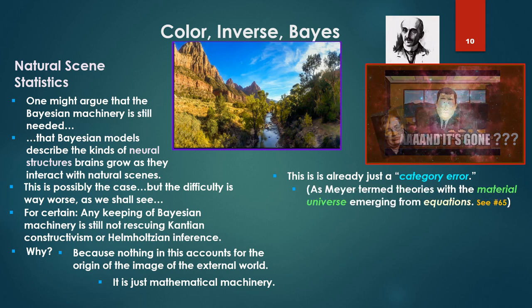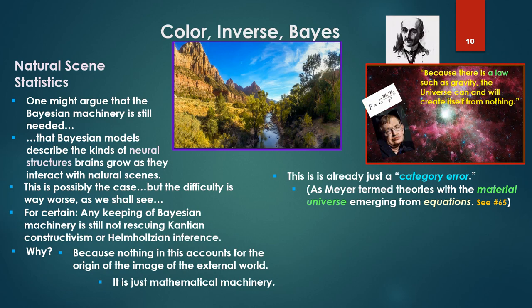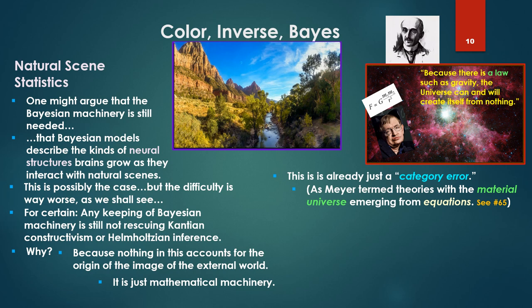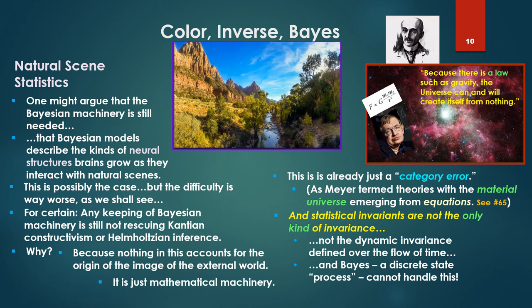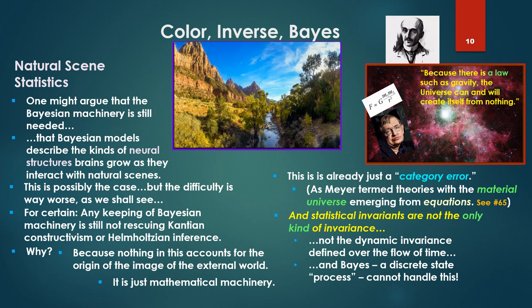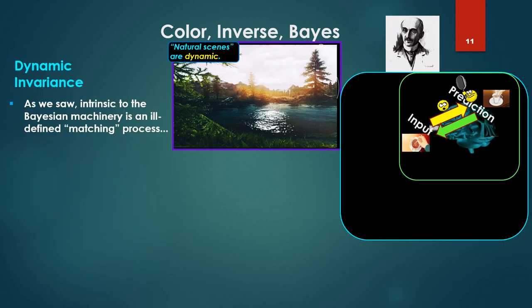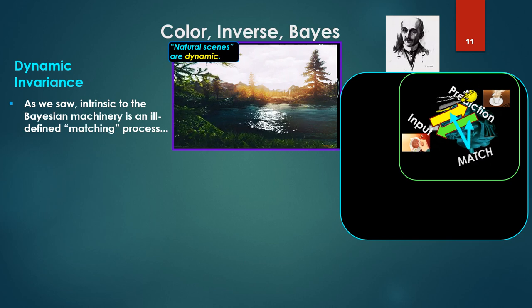This is already just a category error. As we saw Stephen Meyer term theories with the material universe emerging simply from equations, like Platonic equations, like Stephen Hawking there, where it emerges, the material universe emerges because a law exists such as gravity. So we have the material universe, the universe of perception emerging from Bayesian statistics. But statistical invariance is not the only kind of invariance, not the dynamic invariance defined over the flow of time.